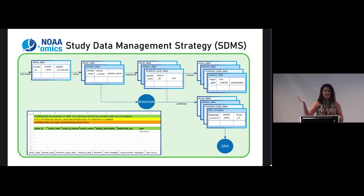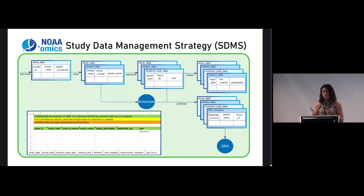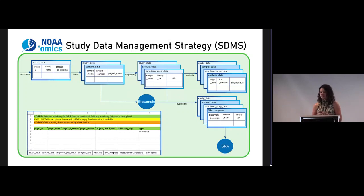Each sheet in this Google Sheet has a different type of metadata or sample data. You might have data about the study as a whole — the funding agency, the name of the project. Then the next sheet would be your sample data: the context about how the environmental sample was collected, the sample name. For Darwin Core folks, this is your event information.